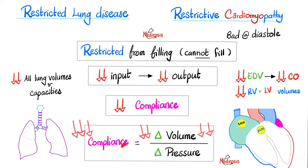Since the relationship between compliance and pressure is inverse, when compliance decreases, that means increased filling pressure. Please do not confuse the volume with the pressure. The heart cannot fill — there is less volume entering the heart. However, the filling pressure, i.e., the pressure required to fill the heart, is high because of all the fibrosis that must be overcome.